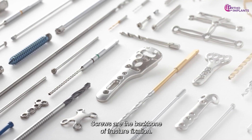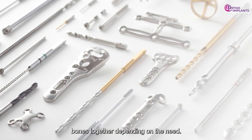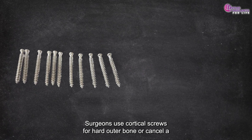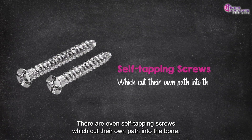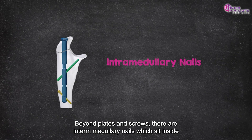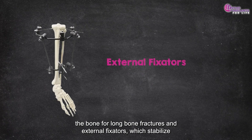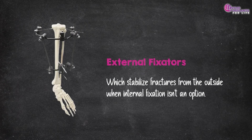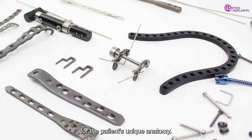Screws are the backbone of fracture fixation. They help anchor plates and provide direct compression to hold fractured bones together. Depending on the need, surgeons use cortical screws for hard outer bone or cancellous screws for spongy inner bone. There are even self-tapping screws which cut their own path into the bone. Beyond plates and screws, there are intramedullary nails, which sit inside the bone for long bone fractures, and external fixators, which stabilize fractures from the outside when internal fixation isn't an option. Custom implants are also becoming more common, ensuring a perfect fit for the patient's unique anatomy.